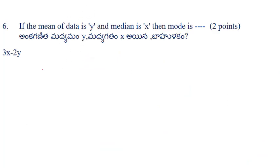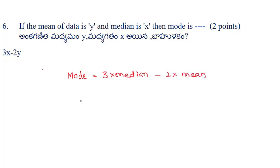Next problem: the mean of the data is y and the median is x. Find the mode. Using the empirical formula: mode = 3 × median − 2 × mean. Substituting, mode = 3x − 2y. So the answer is 3x − 2y.